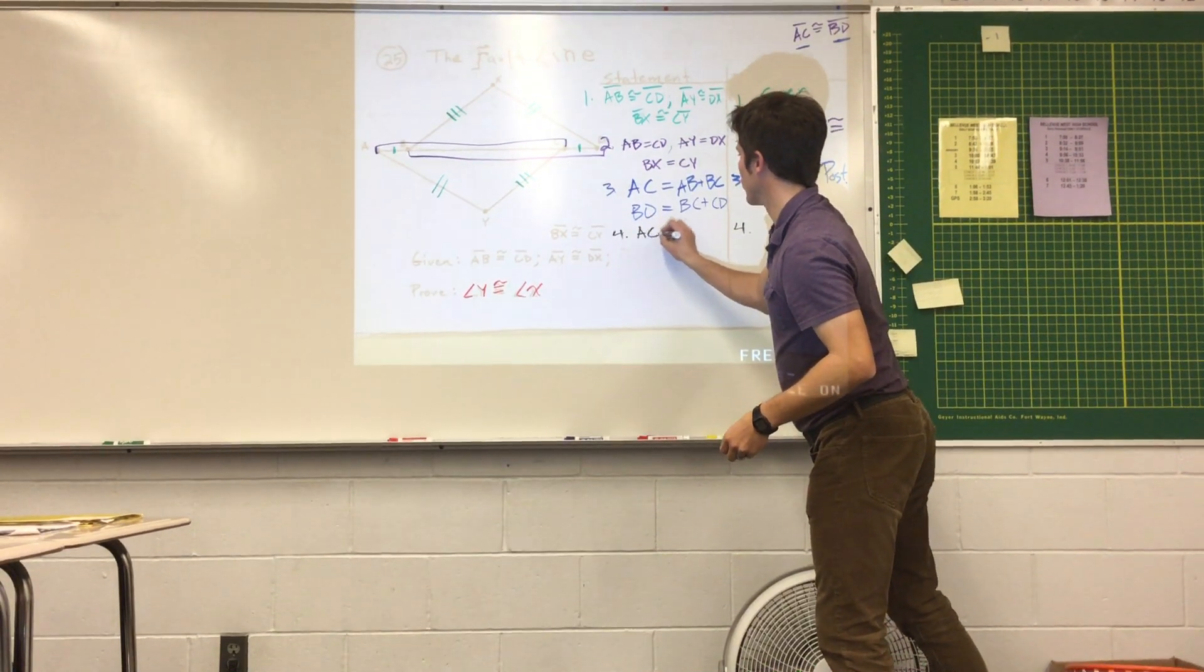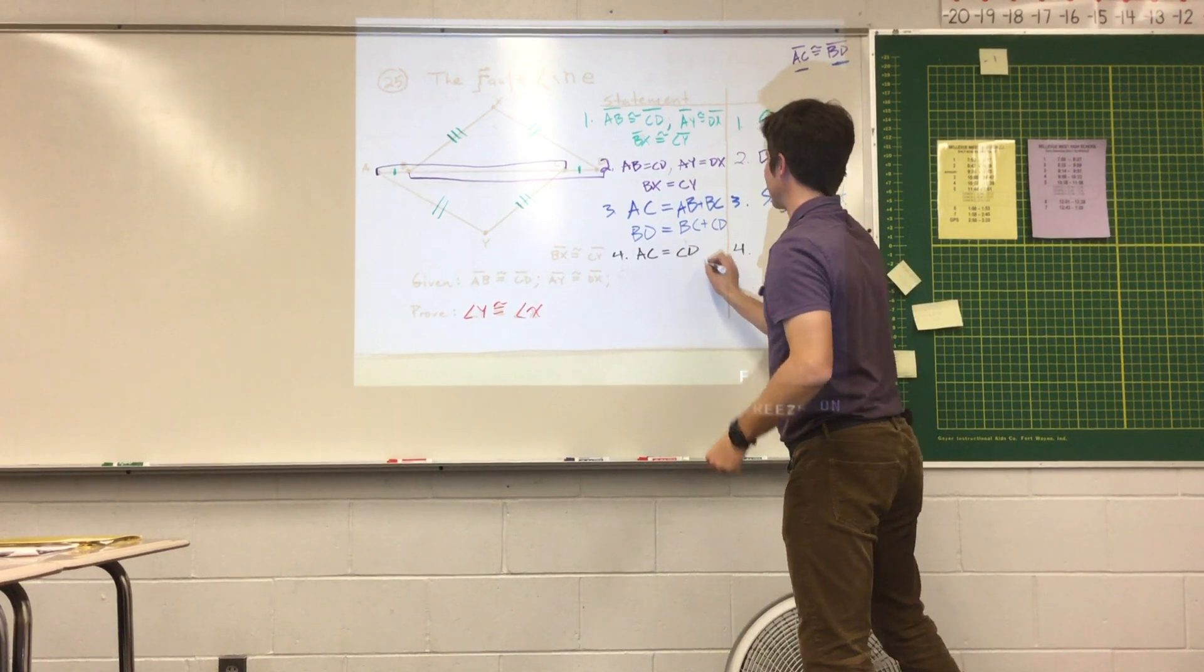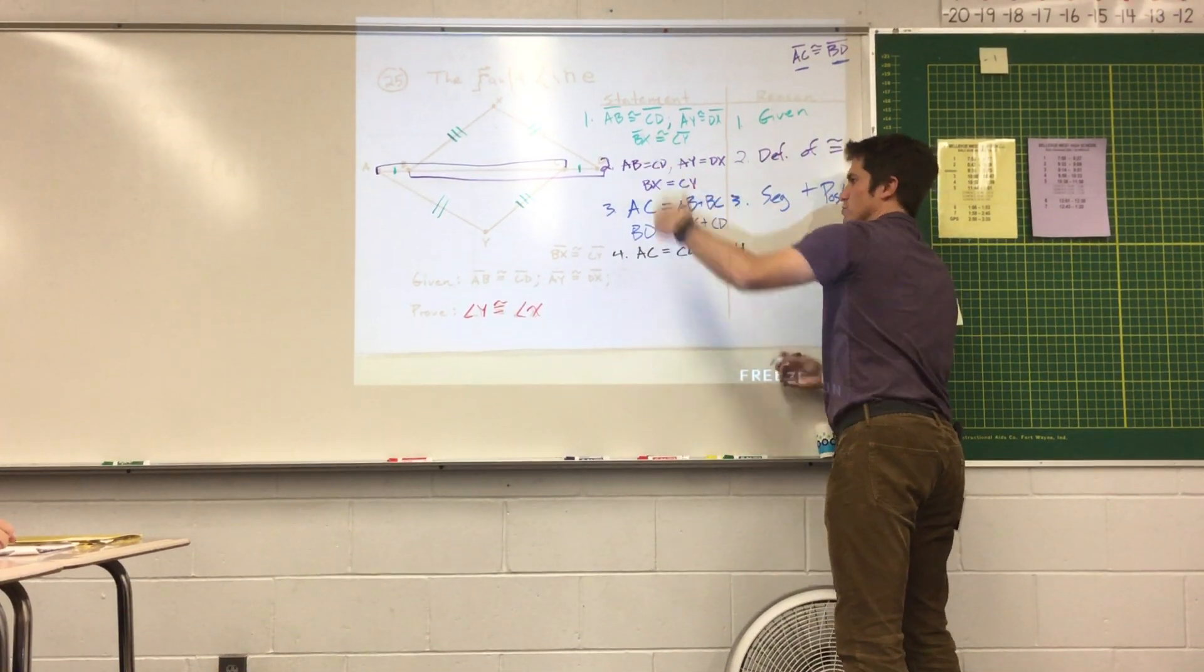So I'm going to rewrite step 3, but instead of writing AB, I'm going to write CD. They're interchangeable so I can do that.